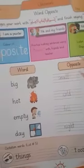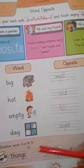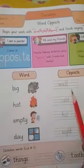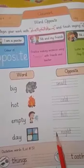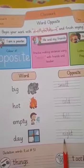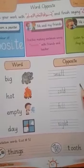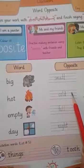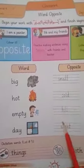I will tell you again — opposite words means words ka ulta word. Like big: the opposite word of big is small. The opposite word of hot is cold. The opposite word of empty is full. The opposite word of day is night. Friends, you have to learn these words at home. You have to practice these words and learn the spellings of these words at home.